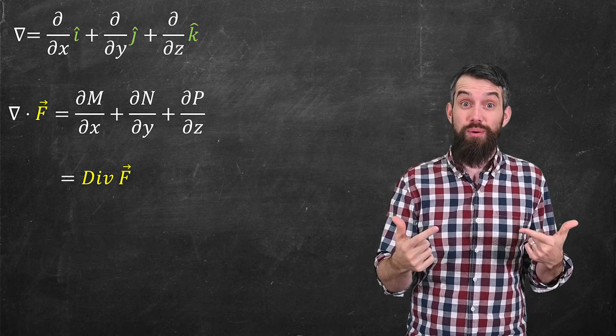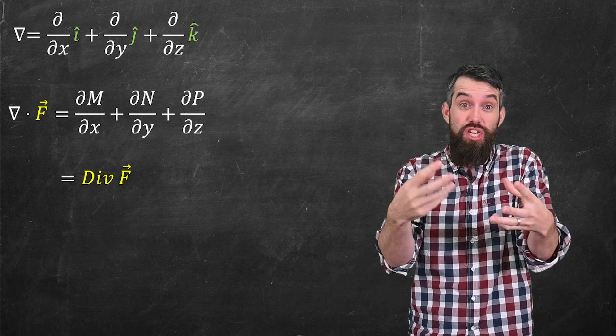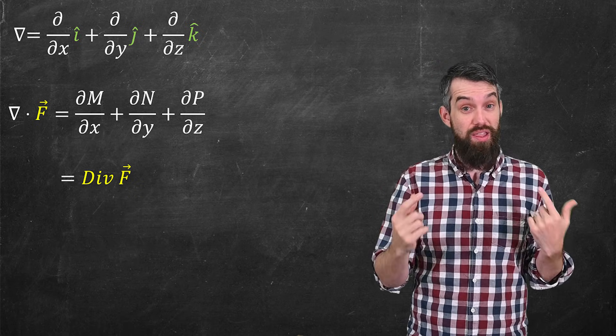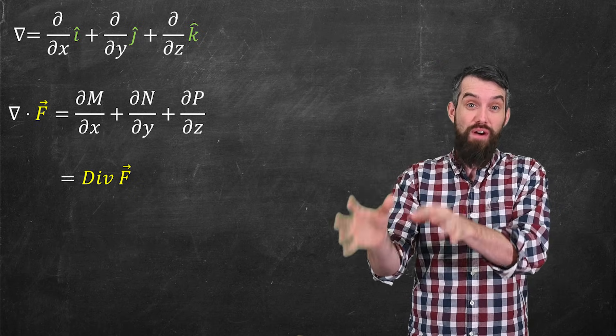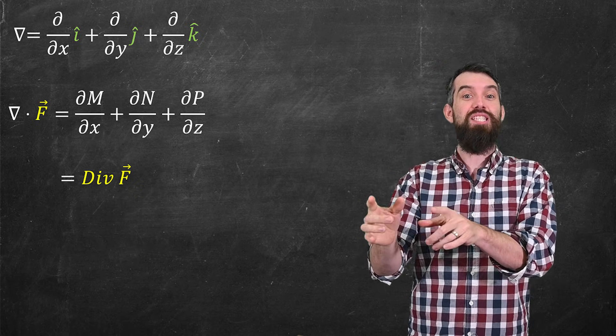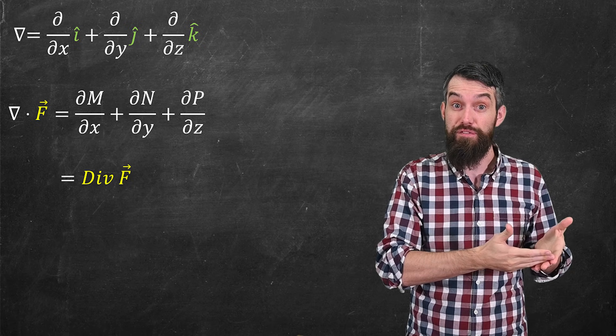This is an operator, which means it's something that takes a function and transforms it to another function. In this case, it takes a vector function, capital F, and spits out the vector function, the divergence of F.